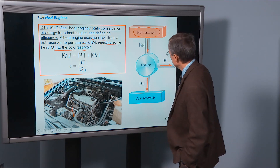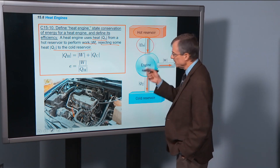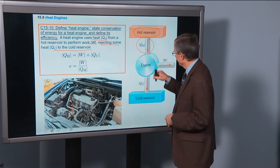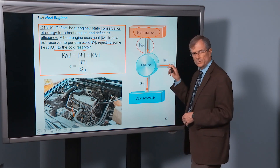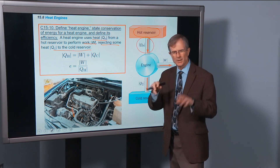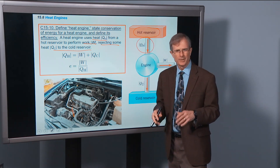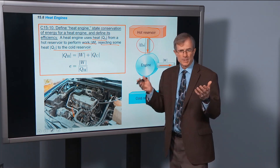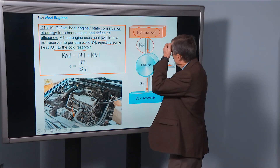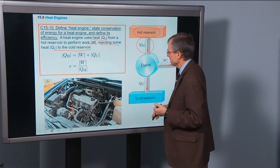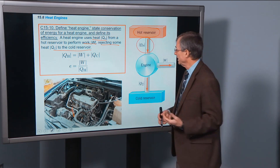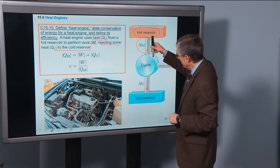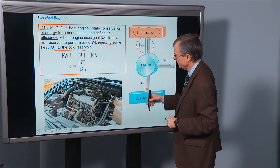What about conservation of energy? Heat is measured in joules — it's a form of energy. That QH goes into the engine. The engine is going to produce work W. I put absolute value signs because I don't want to worry about signs, whether positive or negative. QH with absolute value signs is just the heat added to the engine. We get work out and some heat is lost.